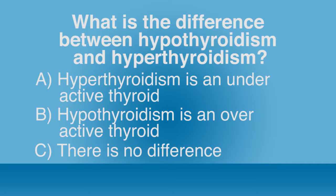Your thyroid gland is a butterfly-shaped gland in the front of your neck and acts as the control center for your body. Hormones secreted by the thyroid help maintain the brain, heart, muscles, and other organs, and help the body use energy properly. The major difference between hyperthyroidism and hypothyroidism is the thyroid's hormone output. Hyperthyroidism is an overactive thyroid and makes too much of the hormone, whereas hypothyroidism is an underactive thyroid, in which the thyroid gland does not make enough thyroid hormone for the body's needs.